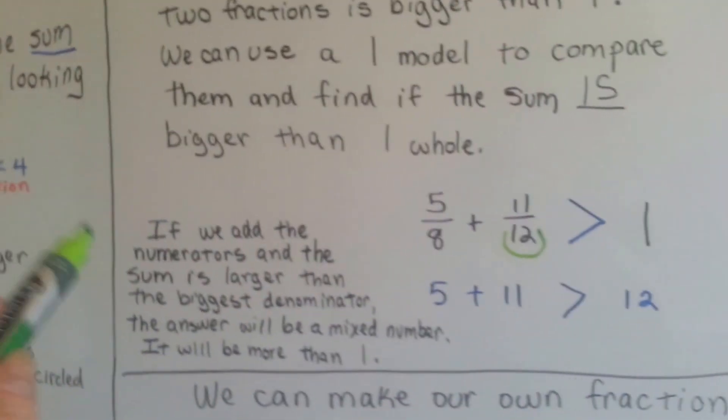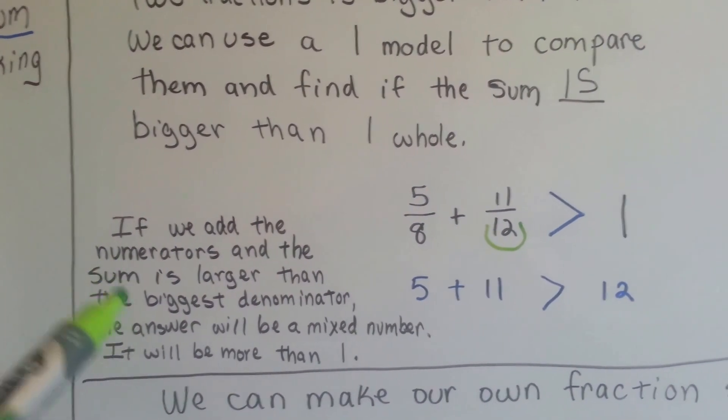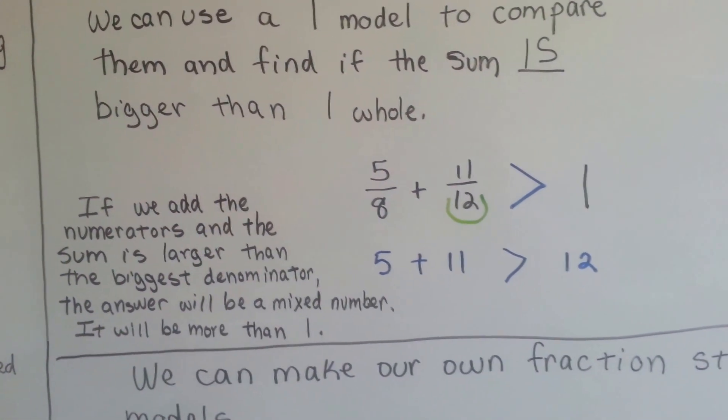If we add the numerators and the sum is larger than the biggest denominator, the answer will be a mixed number. It will be more than 1.